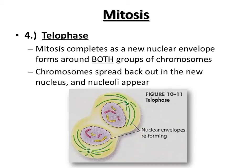The last part of mitosis is telophase, where mitosis completes. Basically, we reverse prophase: a new nuclear envelope forms around both sets of DNA, the spindle breaks down, nucleoli come back, and we start the process of separating the cytoplasm.